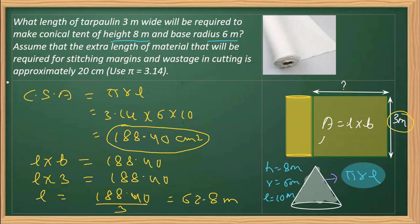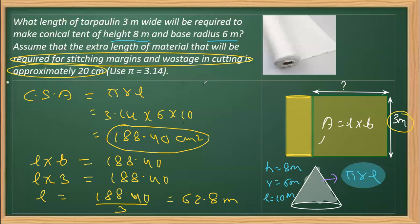Now, when you read this further, we know we need some extra material, right? As you can see here, we require some extra material for stitching margin, and therefore we need to add this. So for getting the final answer, the required length will be 62.8 plus the margin of 0.2 meters. Therefore, 63 meters is the length required.